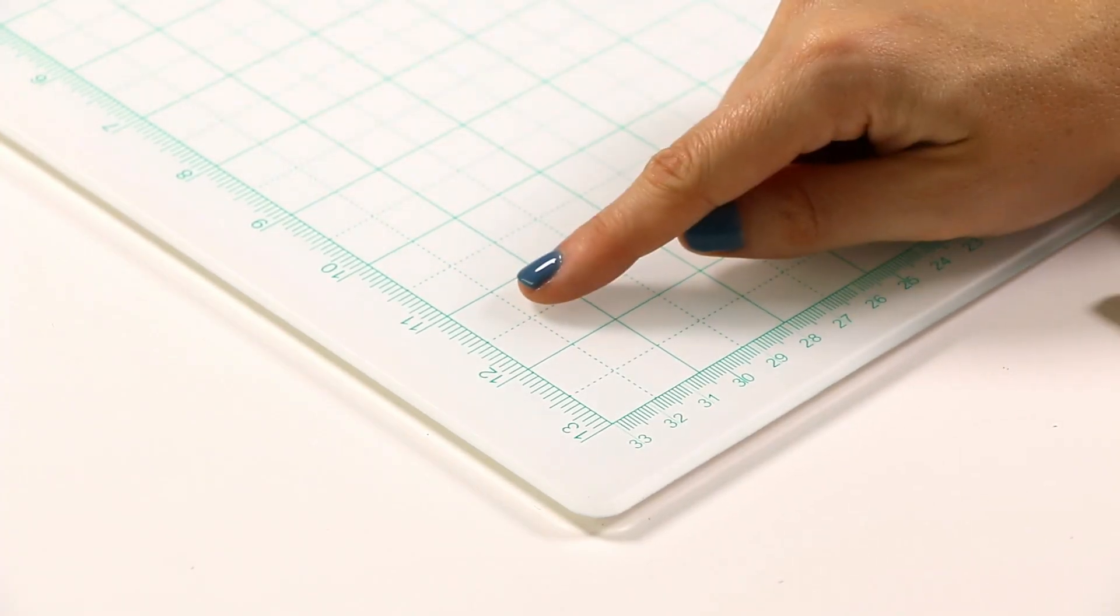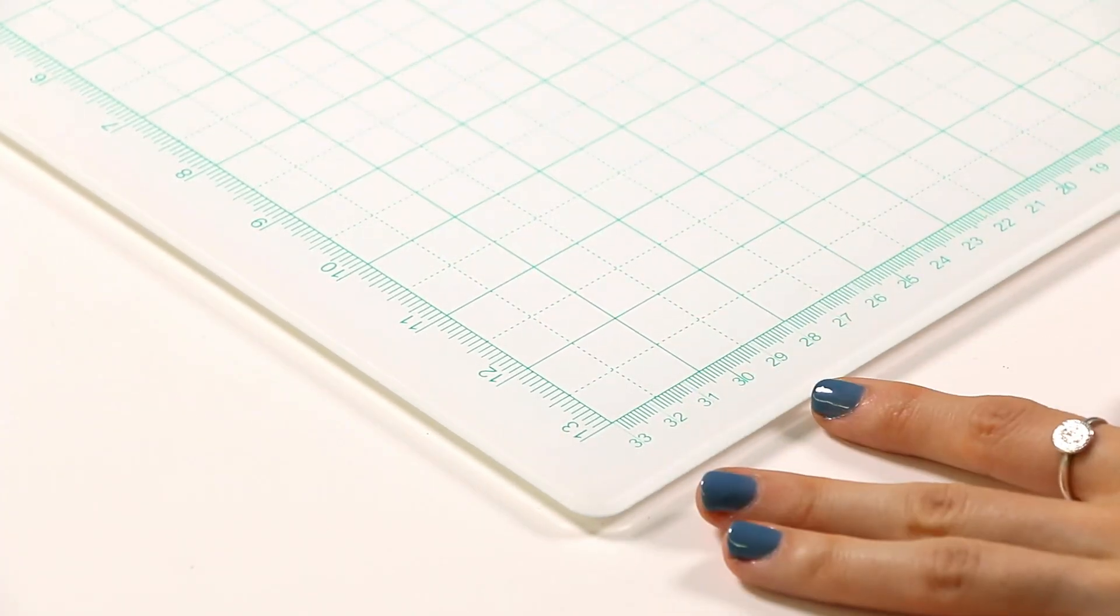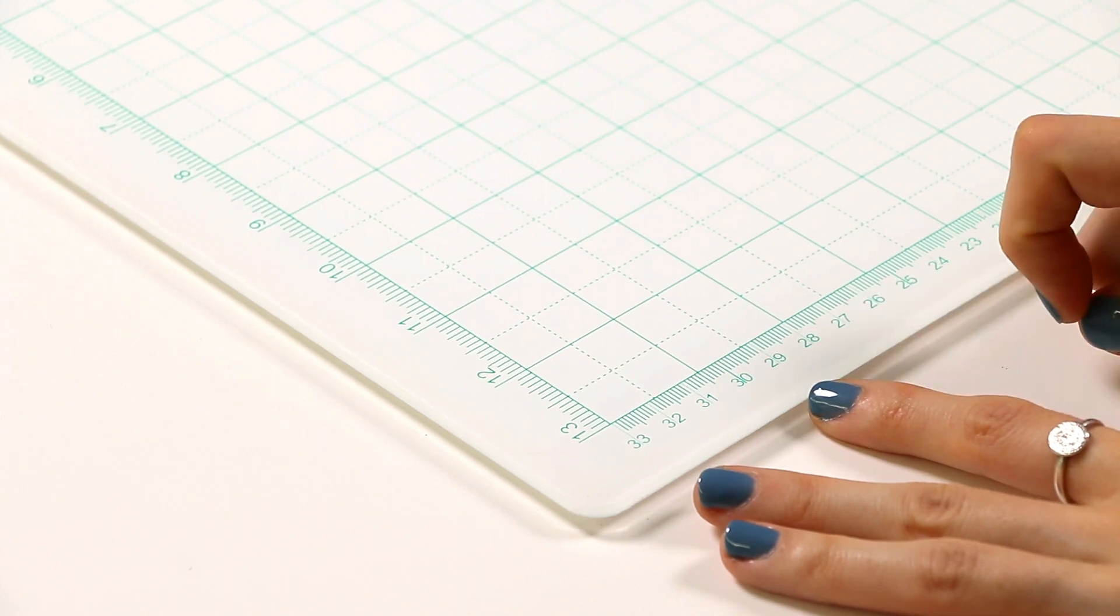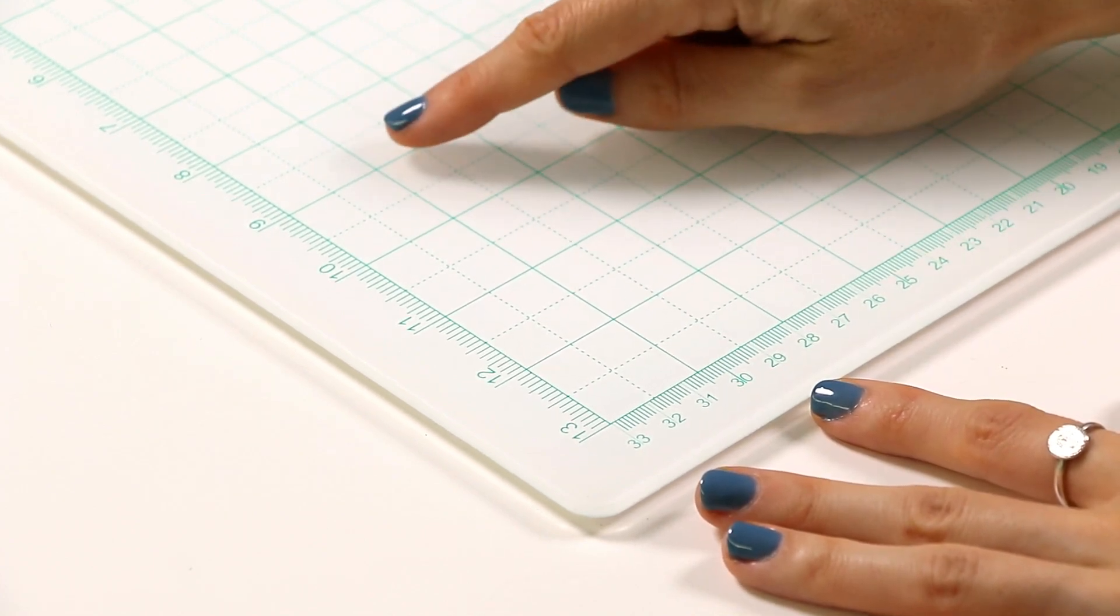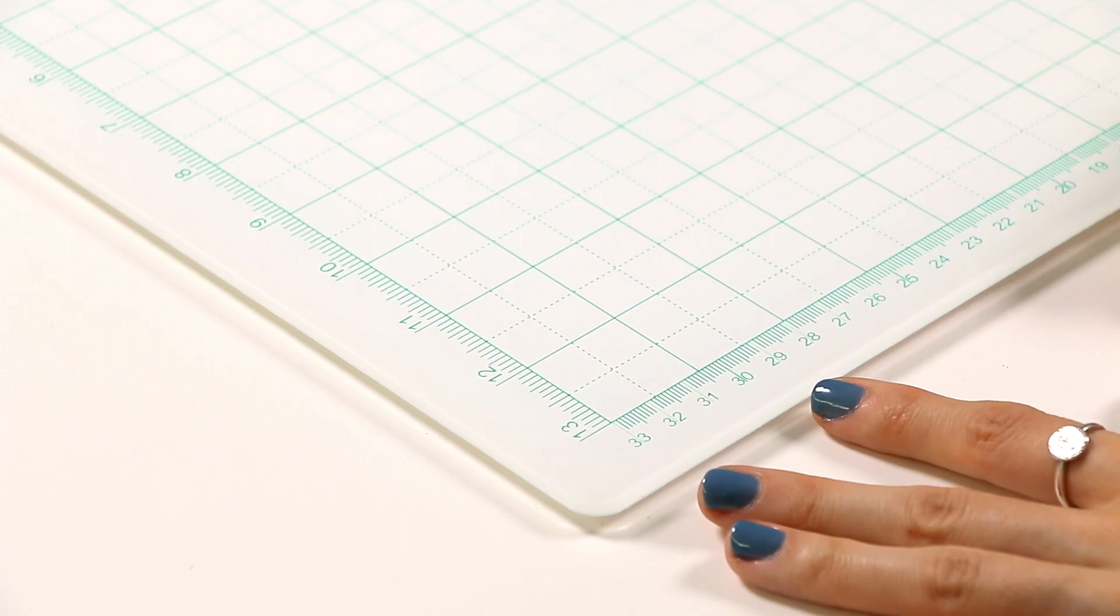The working area has a grid with measurements in both centimeters and inches. The grid is half an inch, thus it is much easier to measure your projects while working.